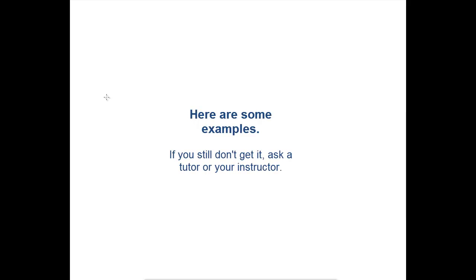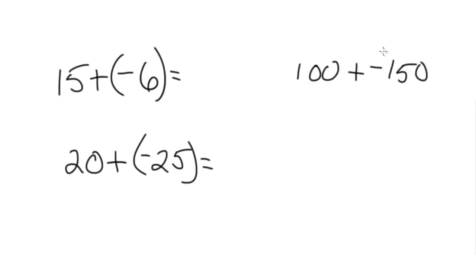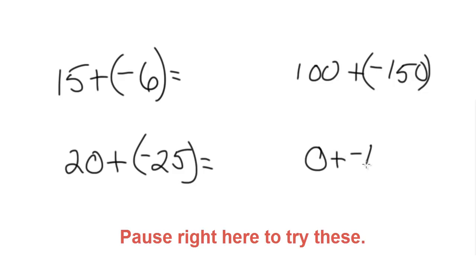So let's try maybe four quick examples and see if you can catch them. If you can't, maybe try to watch the video again or get some extra help from a tutor. But let's try some real quick. Let's try 15 plus negative 6. Let's also try 20 plus negative 25. Let's try 100 plus negative 150. And let's try 0 plus negative 10. If you have to, pause to work these out. But you should be able to do these pretty quickly.